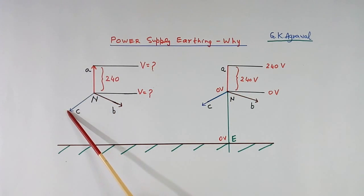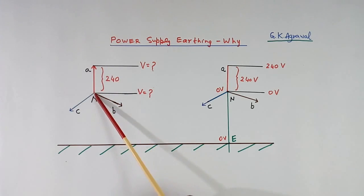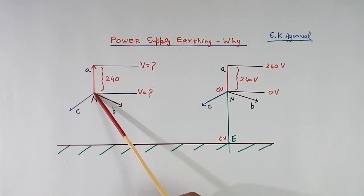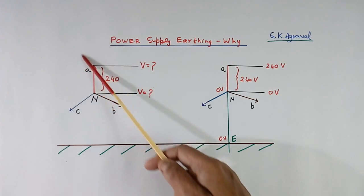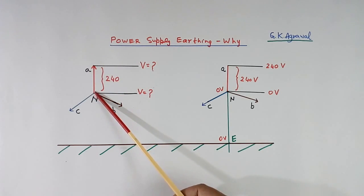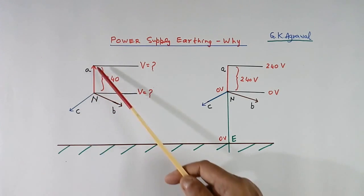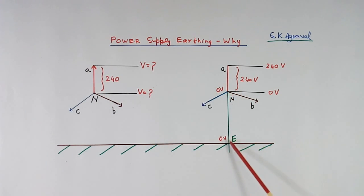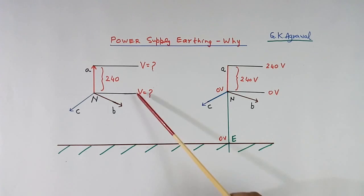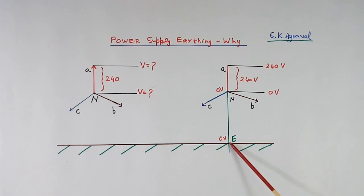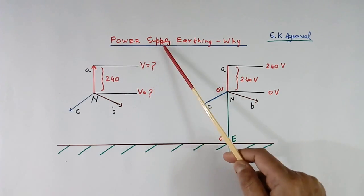Here I have shown the secondary of the transformer. This phase voltage is 240 volt. If this neutral is not connected to earth, we know the voltage across this, but we don't know the voltage of this point with respect to earth — it is called a floating system. Suppose some lightning or switching impulse comes; this point may go to very high voltage, so this equipment may fail because the voltage of each point with respect to earth is not known. But here, where neutral is connected to earth, this point becomes 0 volt. The voltage of each point is fixed and known with respect to earth, so this is a safe system. Here equipment will fail; here equipment will not fail. So power supply side earthing is done to protect the equipment.